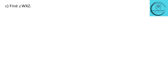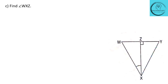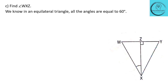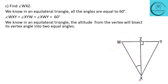The next question: find angle WXZ. In this equilateral triangle, all angles equal 60 degrees. Additionally, the altitude from the vertex bisects the opposite side and divides the vertex angle into two equal halves. So this half equals this half, and since the entire angle is 60 degrees in an equilateral triangle, angle WXZ equals angle WXY divided by 2, which is 30 degrees.